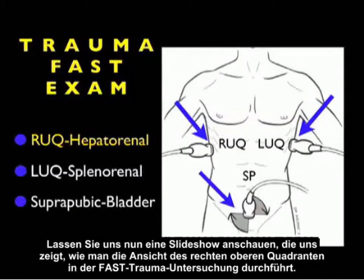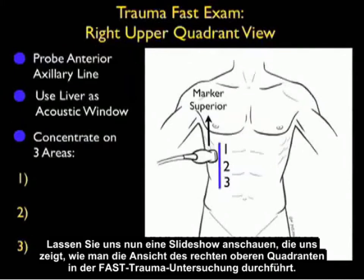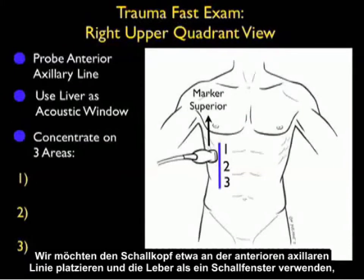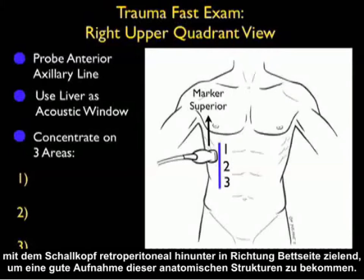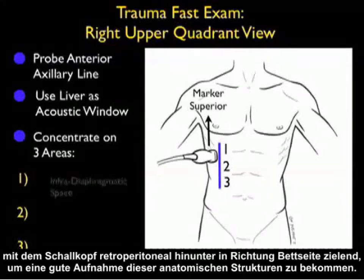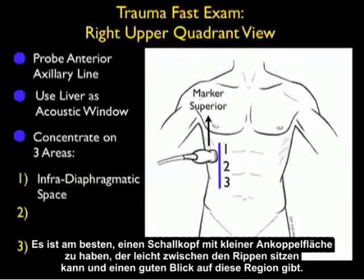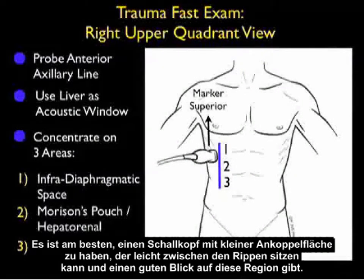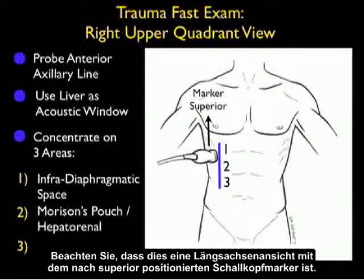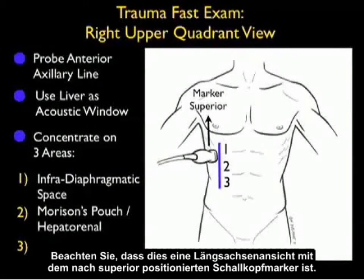Now let's take a look at a slide showing us how to perform the right upper quadrant view of the trauma FAST exam. We'll want to place the probe at about the anterior axillary line, and using the liver as an acoustic window, aiming the probe down towards the bedside retroperitoneally to get a good view of these anatomical structures. It's best to have a small footprint probe that can easily sit between the ribs. Notice that this is a long axis view with a probe marker positioned superiorly.